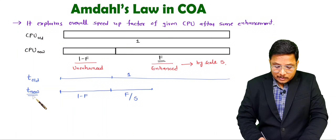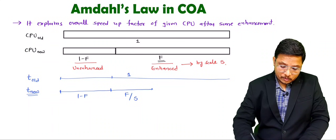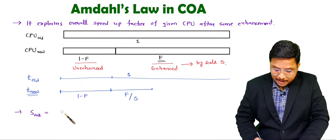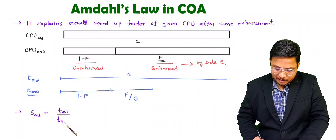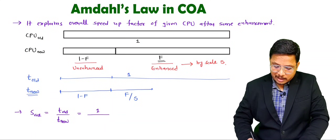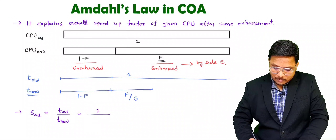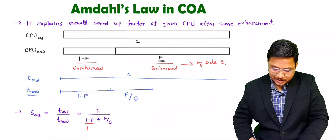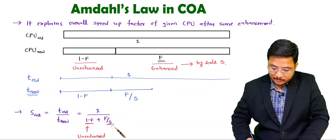So the overall speed factor equals old time period divided by new time period. The old time period is 1 (normalized). The new time period is (1 minus F) plus F/S. Here, (1 minus F) is the unenhanced fraction and F/S is the enhanced fraction's time.